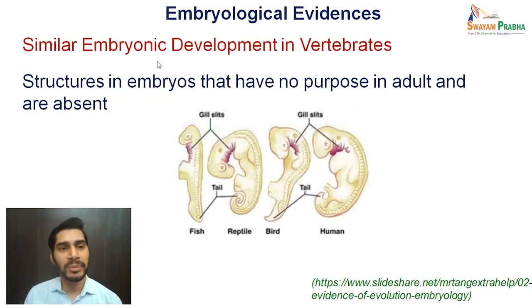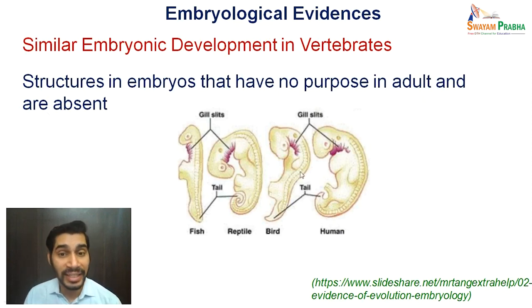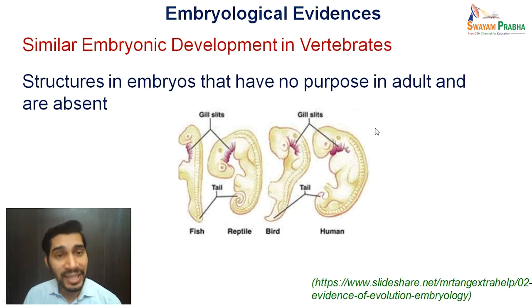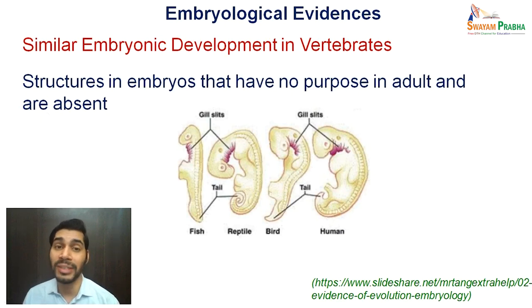In triploblastic organisms, if you compare their embryonic development, there is a common pattern of development. After fertilization, an egg goes to the next stage called blastula, blastula goes to gastrula, and gastrula then forms the germ layers which further leads to formation of tissues and organ systems. This common pattern of development is followed in all triploblastic organisms irrespective of their complexity, origin, and differences otherwise — which indicates that there has been a common origin. Yet another example comes from the similar embryonic development in case of vertebrates — structures in embryos that have no purpose in adult forms, like gill slits and tails in a human embryo.